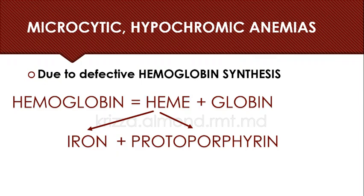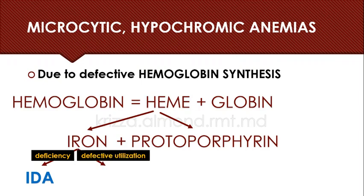If there is a problem with iron metabolism, such as when we have deficiency states, we will develop a type of anemia called iron deficiency anemia. Or sometimes we have normal amounts of iron but the problem is we cannot utilize it very well, so defective utilization will also affect iron metabolism.